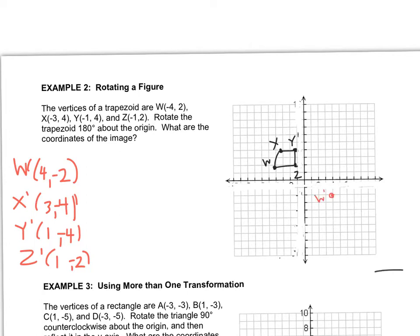Make sure that you have the letters, because if you don't, then you have to rotate it back and figure out what they were. Where X prime is going to be at 3, negative 4, Y prime is at 1, negative 4, and Z prime is at 1, negative 2. So kind of sloppy, but that's what it looks like.